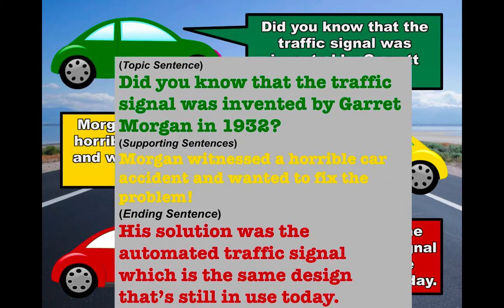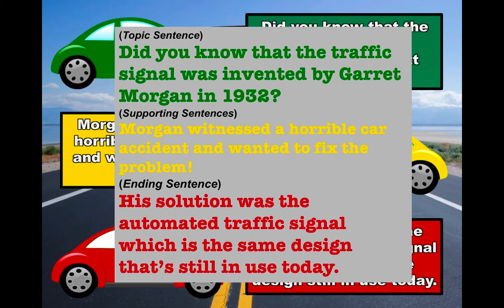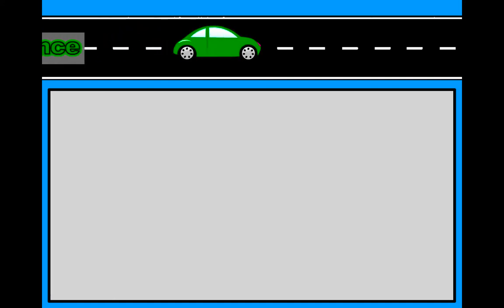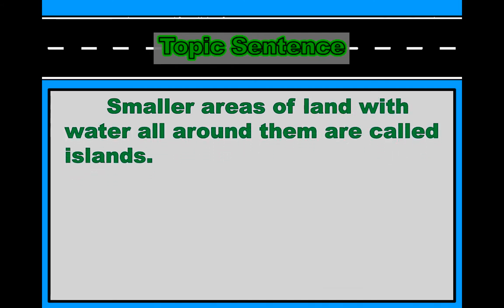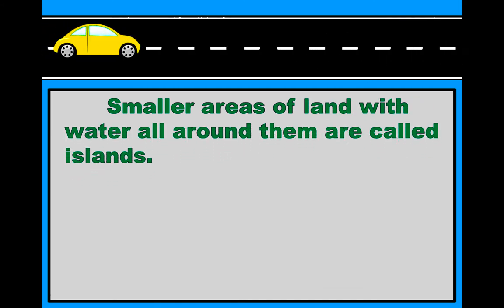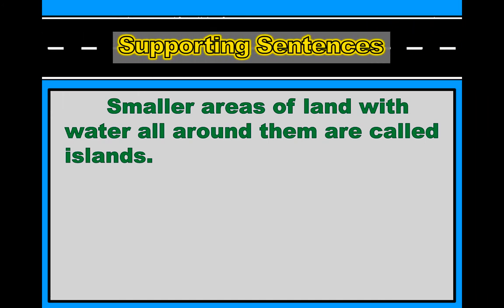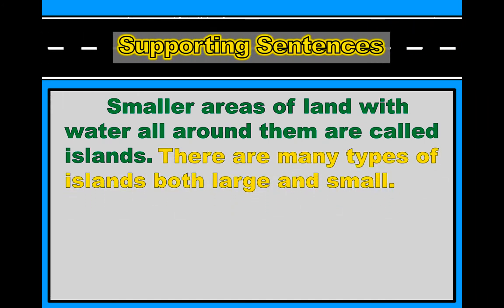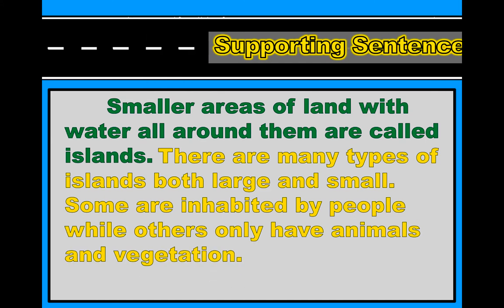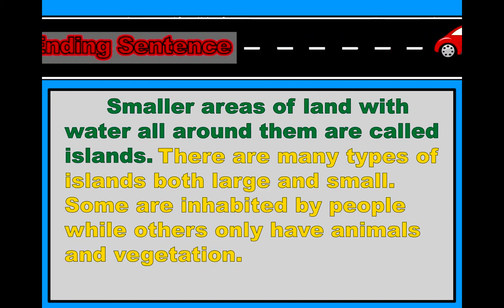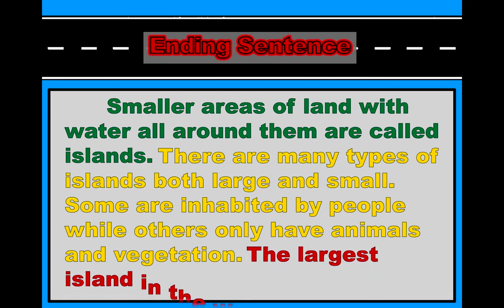Here is how the paragraph looks all together. Green topic sentence: Smaller areas of land with water all around them are called islands. Yellow supporting sentences: There are many types of islands, both small and large. Some are inhabited by people, while others only have animals and vegetation. Red ending sentence: The largest island in the world is Greenland.